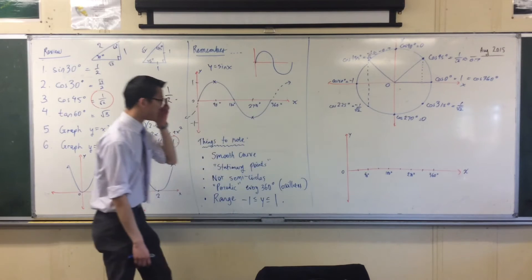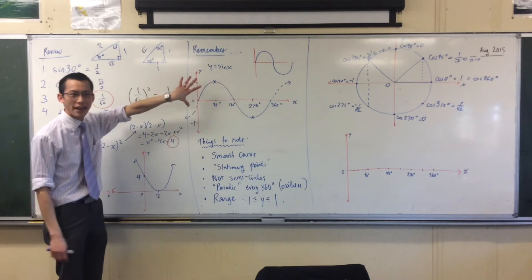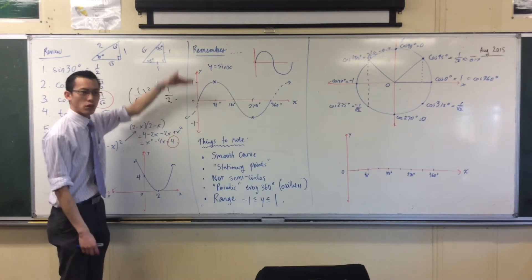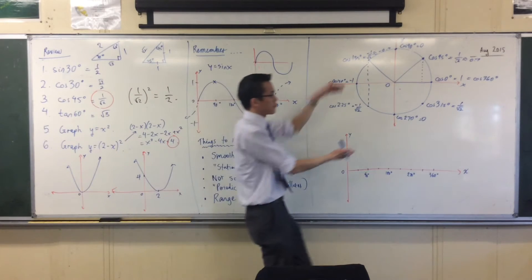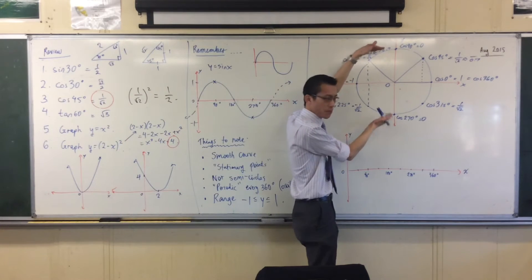Now, you remember that the range of sine x was from negative 1 to 1, and that's because that's the range of the circle. The unit circle is from negative 1 to 1.